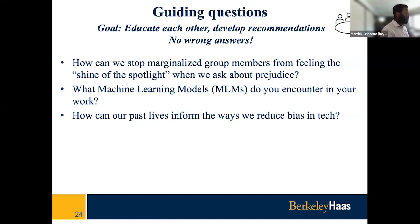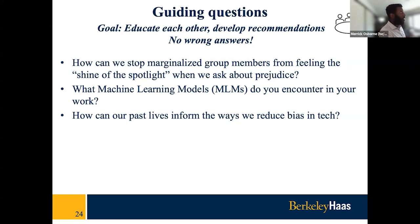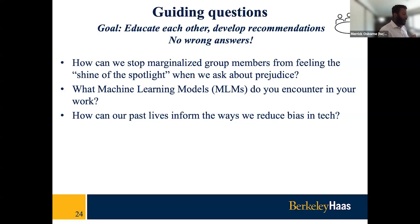The speaker responded: yes, weighting different underrepresented groups has been a strategy. The challenge with it is that those weights themselves are also subjective if they are implemented. For example, you can imagine that there might be a group of people and you decide to weight one subgroup more than another, and that might still lead to some sense of biased results. But that is something that my computer science colleagues have been working on — to understand what's the optimal way to weight an algorithm to reduce unfairness.